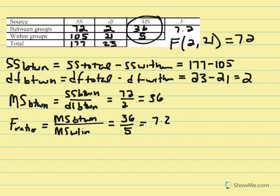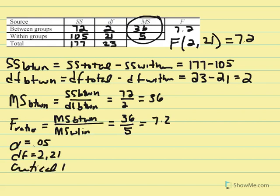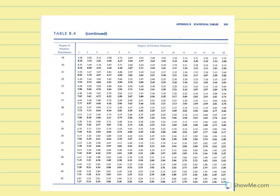Using alpha equal to 0.05 with degrees of freedom 2 and 21, we find our critical F value. With numerator DF of 2 and denominator DF of 21, looking at where they intersect in the F table, we get a critical F equal to 3.47.